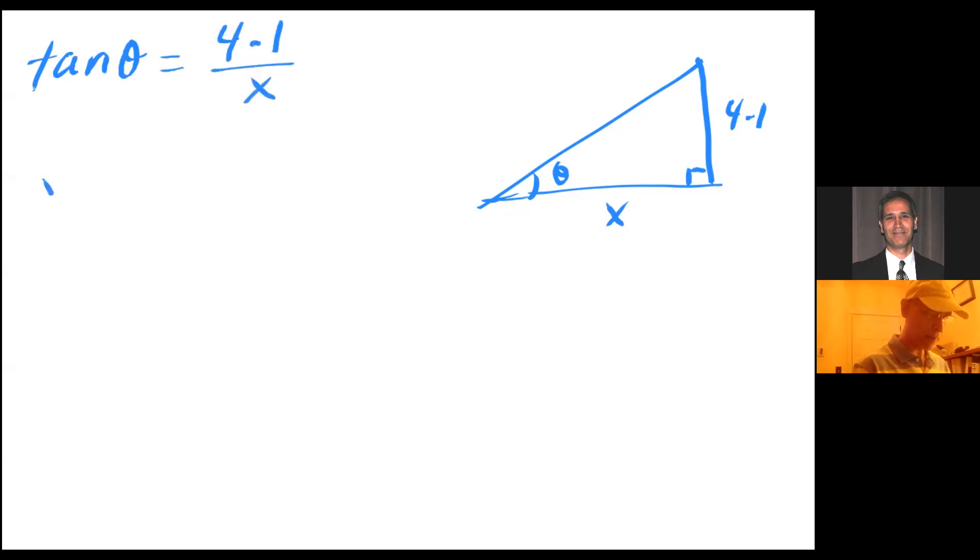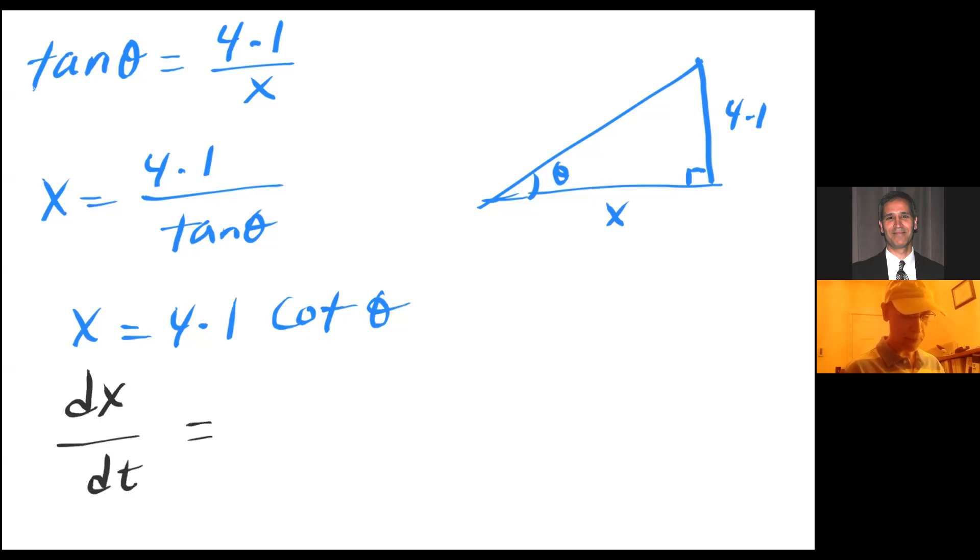So x equals 4.1 divided by tangent of theta. And since I want to take the derivative, I'm going to rewrite this as x equals 4.1 times cotangent of theta. And so now I can claim that dx/dt equals derivative cotangent is minus cosecant squared. So I have a negative 4.1 cosecant squared theta d theta dt.